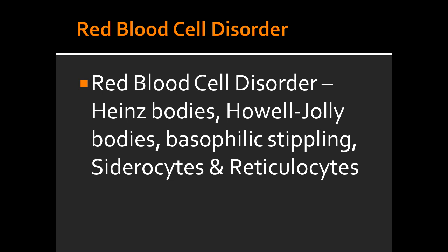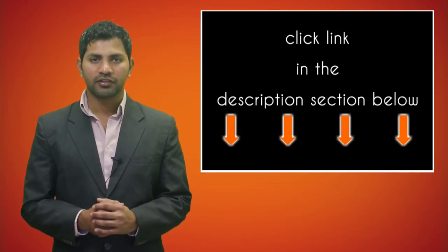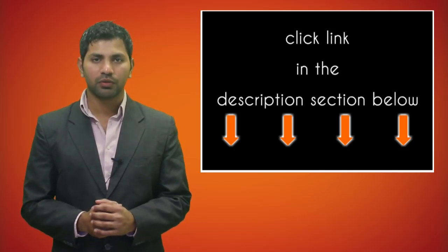In what condition would there be reticulocytes, which have the remains of ribosomal RNA? Reticulocytes can be seen in conditions that cause an increase in the production or release of RBCs, as well as in conditions after a hemorrhage. For more information on this topic and for a full USMLE Step 1 review, click on the link in the description section below.